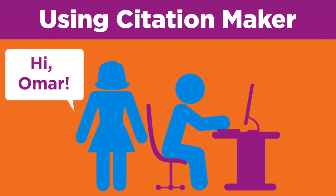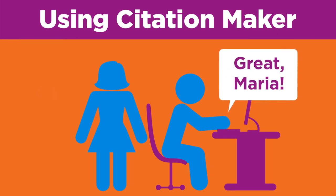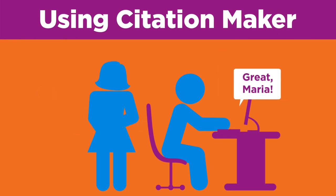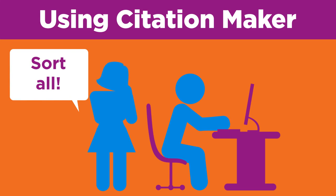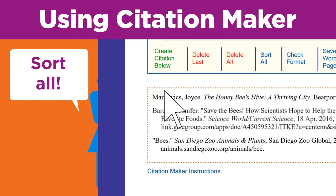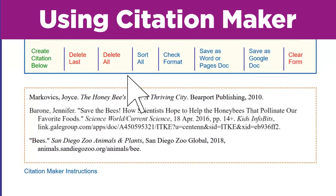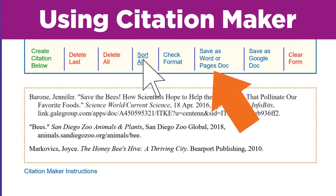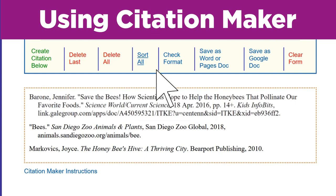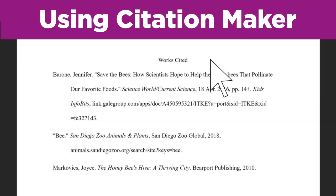Hi, Omar. How's your Works Cited page coming? Great, Maria. I'm almost done. Looks like you need to click the Sort All button to put your citations in alphabetical order. Good catch. Now you can save your citations as a Word, Pages, or Google document. What are you using? I'm using Word. Wow, here's my Works Cited list all done. Wasn't that easy? Sure was. Thanks for telling me about Citation Maker. I'll be using it for every project.